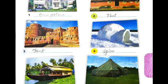Next, we have an igloo. It is made up of ice.